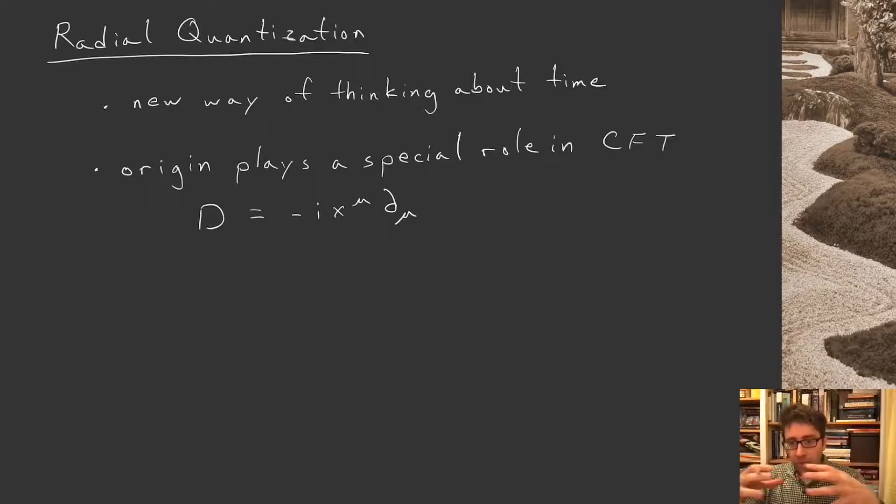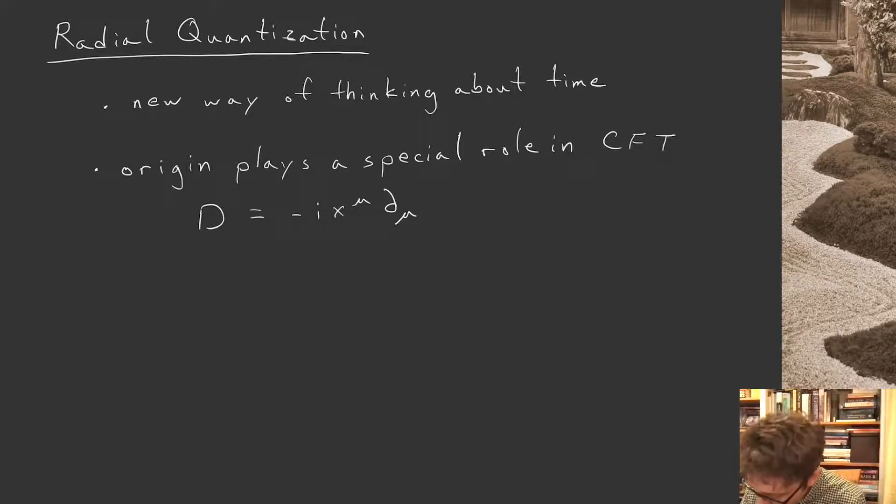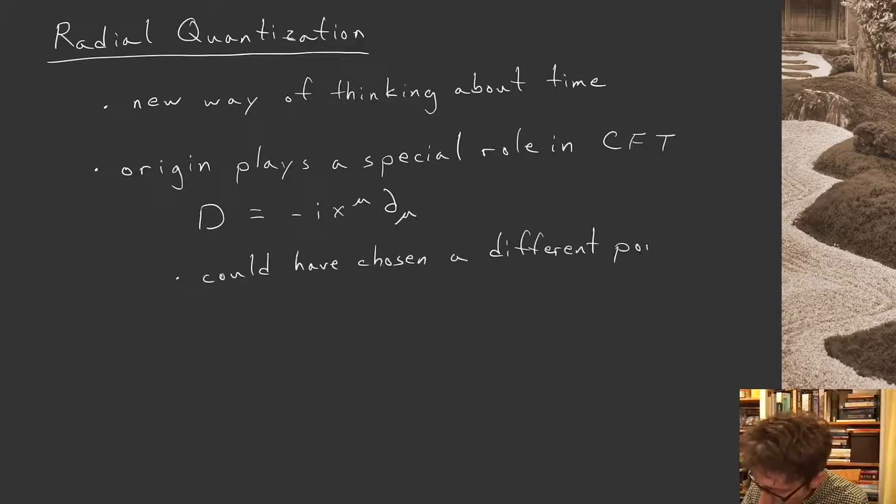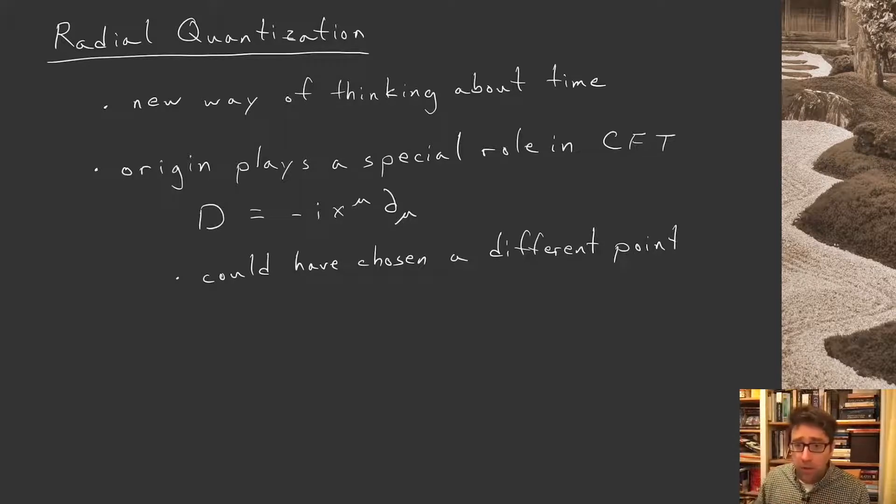By choosing the origin as a point with respect to which we generate these scale transformations, we've made the origin a very special point given our choice of generators. We could, of course, have chosen another point to generate scale transformations. We could have a different point. They're all the same, right? We have this huge conformal symmetry group.